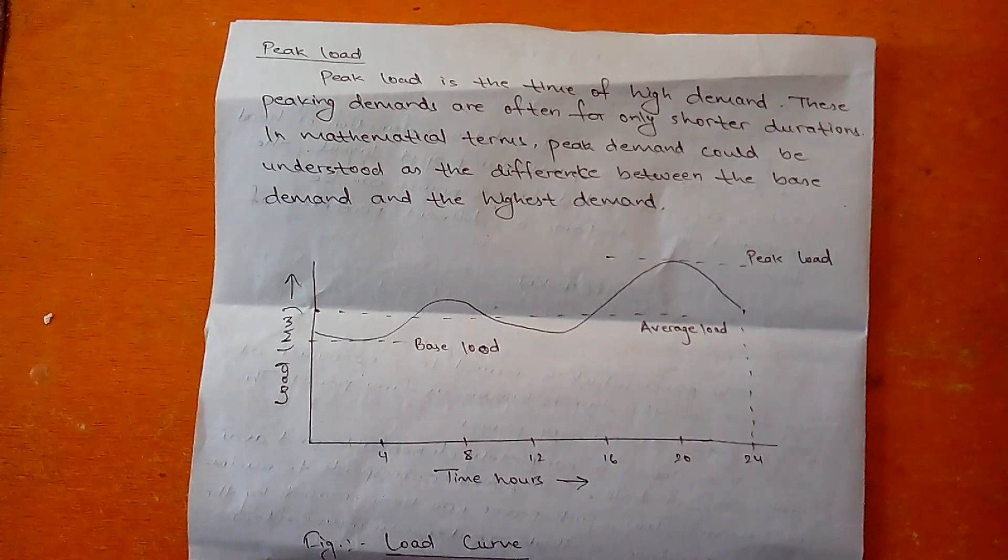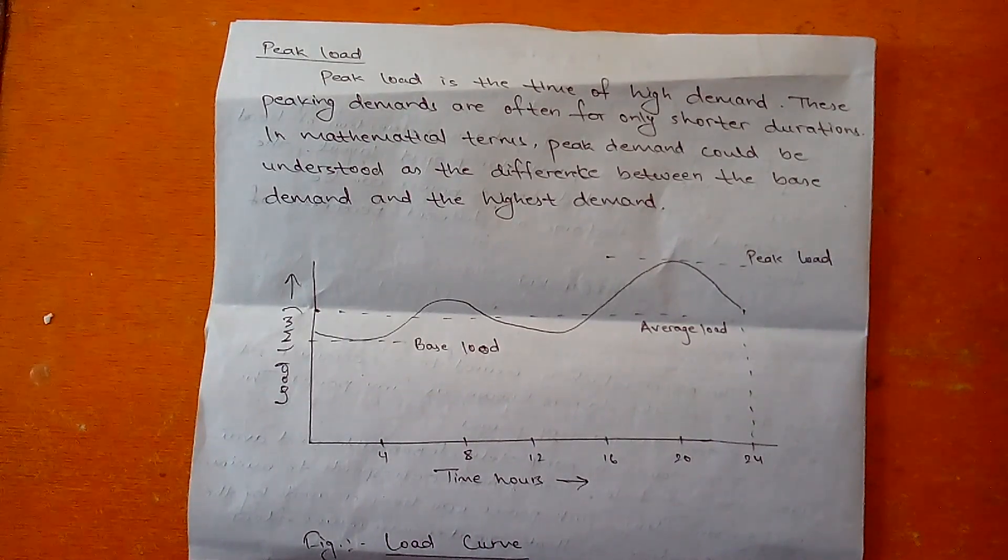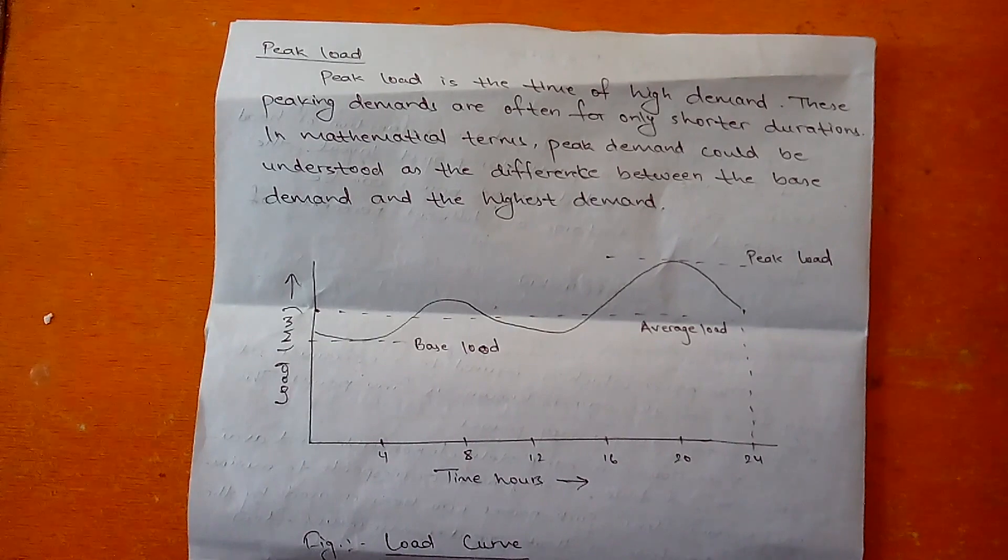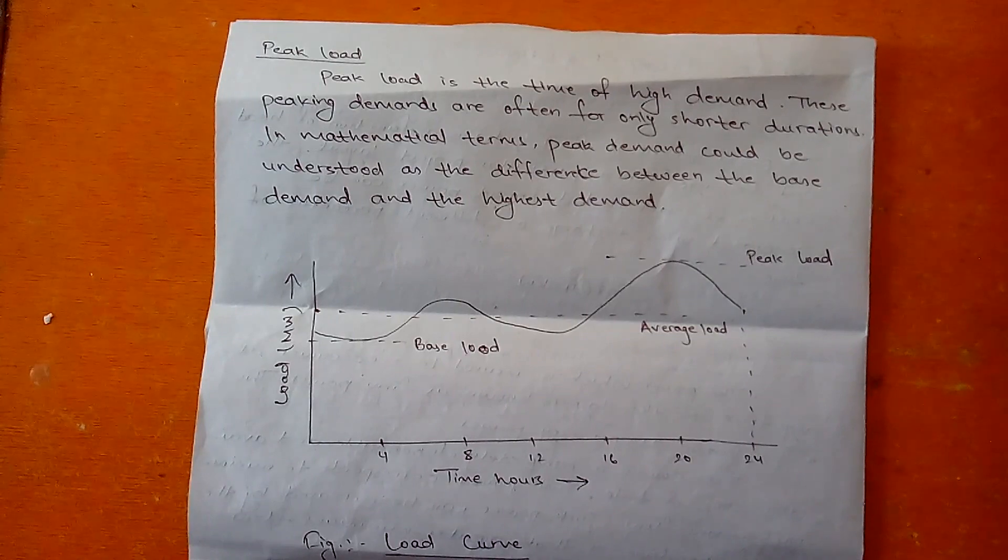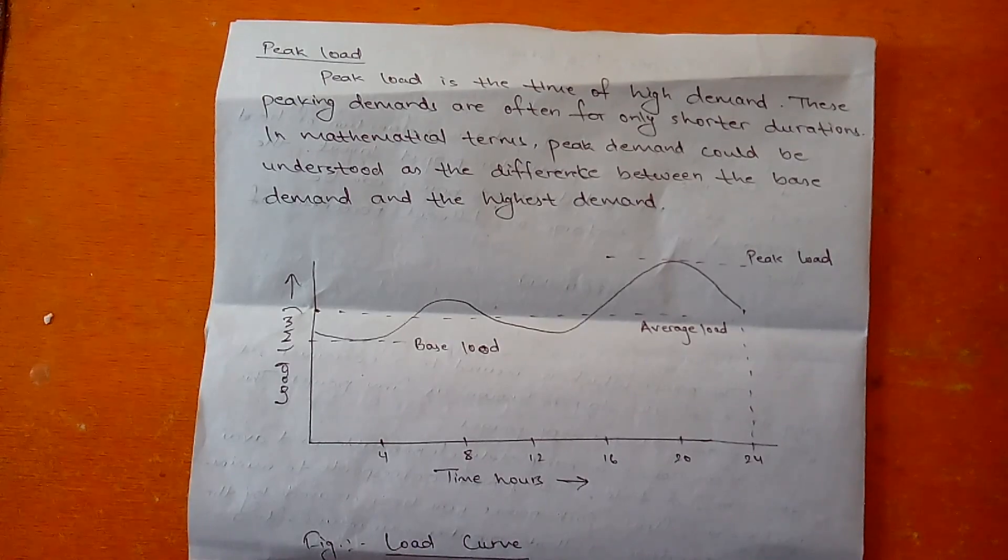On average, around 10 p.m. has the highest peak on the graph. That means there is very high industrial operation. And the middle dotted line shows the average load, which is the average of both peak load and the base load.